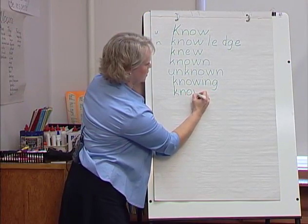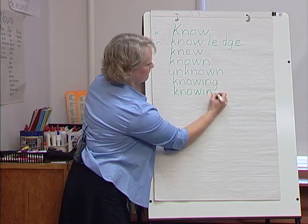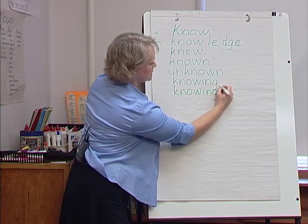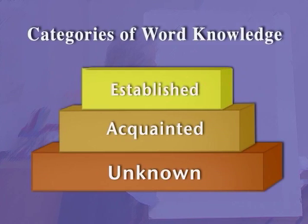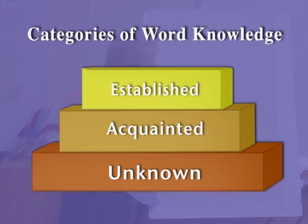As you plan your instruction, keep in mind that children know words at varying degrees. Word knowledge falls into three categories: unknown, acquainted, and established. Unknown words are completely unfamiliar and the child does not know the meaning. Words that a child is acquainted with are somewhat familiar and the child has some idea of the basic meaning. Established words are very familiar and the meaning is immediately recognized. To understand a text fully, it is ideal if a child's word knowledge for that text is established.